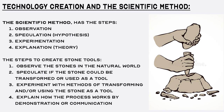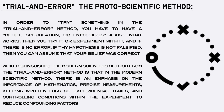The creation, development, and use of tools and technology is evidence of a scientific or proto-scientific method having to exist in the mind. For archaic humans, this proto-scientific method was the trial and error method. The trial and error method also contains falsifiability — you must have a belief, speculation, or hypothesis about what works, then try it, and if there is no error, if the hypothesis is not falsified, then you can assume your belief was correct. What distinguishes the modern scientific method is the emphasis on mathematics, precise measurements, keeping written logs of experimental trials, and controlling conditions to reduce confounding factors.